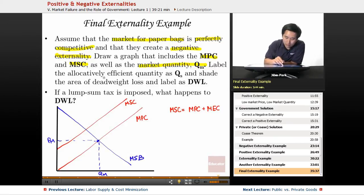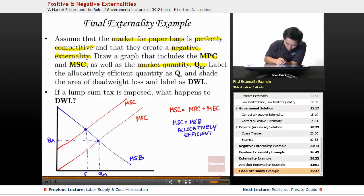Label the allocatively efficient quantity as Qs and shade the area of deadweight loss. The allocatively efficient point is where MSC equals MSB. Here is Q star and P star. The allocatively efficient quantity - you can call it Q star, but they want you to call it Qs.